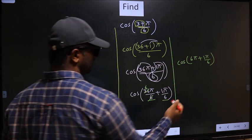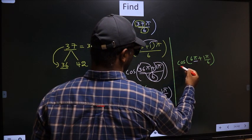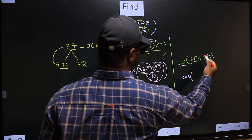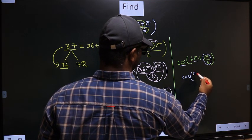Next, here we have π, so cos is not going to change. It will remain cos, and inside we get this angle: π by 6.